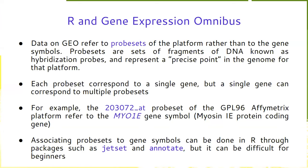For example, the probe set '203072_at' is a probe set for the GPL96 Affymetrix platform and it refers to the MYO1E gene symbol — the myosin IE protein-coding gene. Of course, as you can understand, it is necessary to perform a mapping between these probe sets and gene symbols, and there are already some packages that do that, like jitset and annotate.